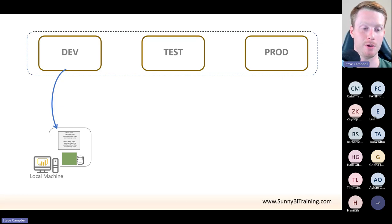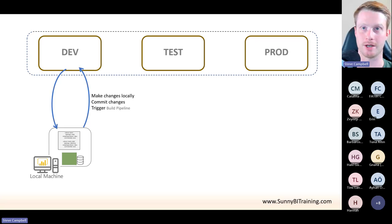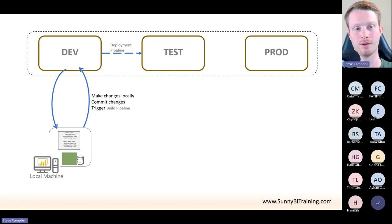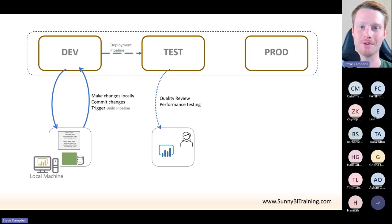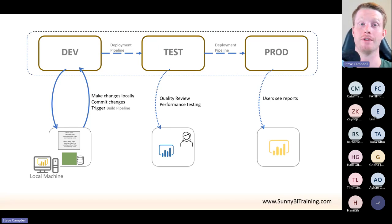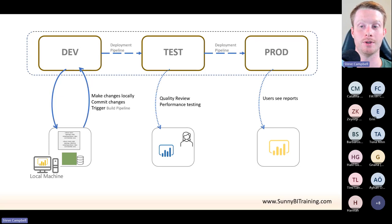Everything we talked about in Git — the integration, the copies of code, the pipelines — they all happen in the development workspace. This is where we make changes and are happy with it. We commit the changes, trigger our build pipelines, our pull requests, and we're happy the code is correct. Then we run something called a deployment pipeline, which essentially copies all the code — the reports and datasets — from the development workspace into the test workspace. The test workspace is where testing happens. We try to automate this as much as possible, though sometimes we'll just do it manually and look at the reports to check they're correct.